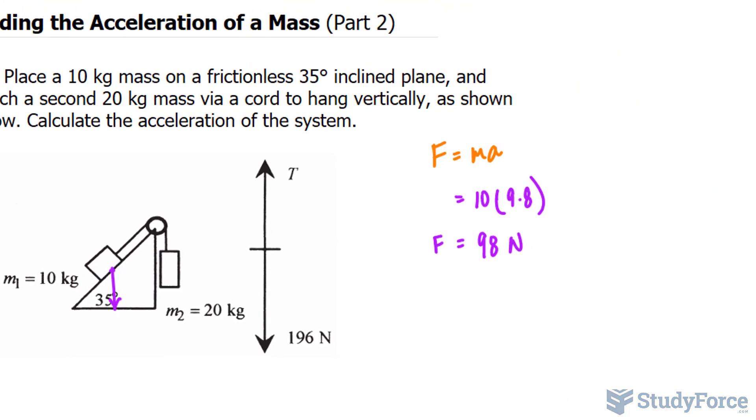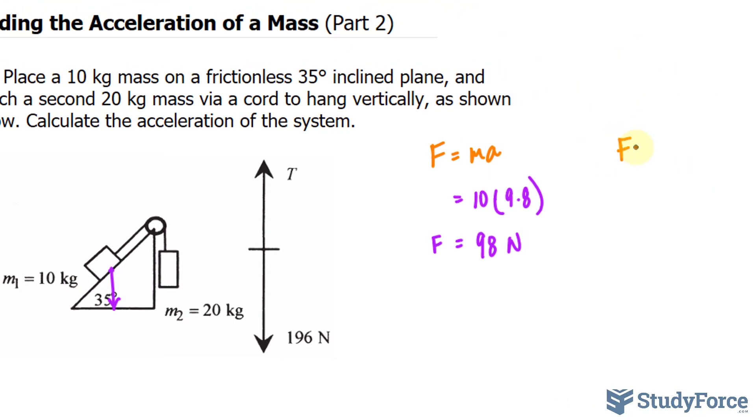So I just found the force due to gravity being exerted on this mass. I'll do the same thing for the other one. I'll get these calculations out of the way because they are important and will help us later on. For this we have a mass of 20 multiplied by 9.8, which equals 196 newtons.